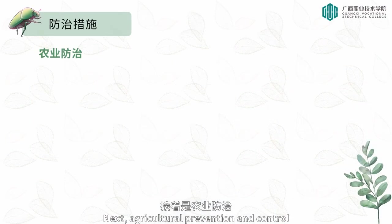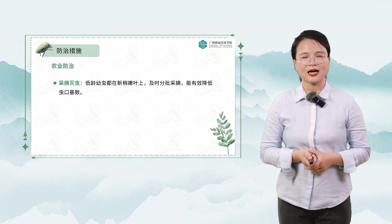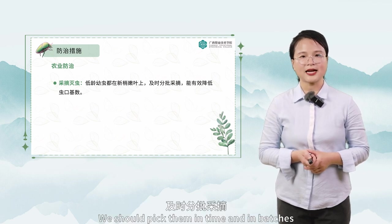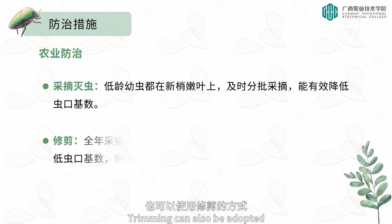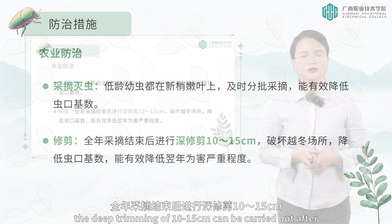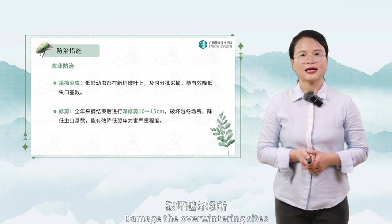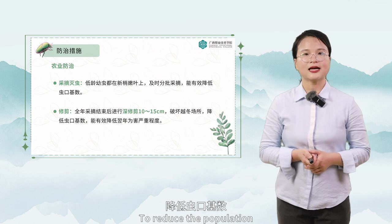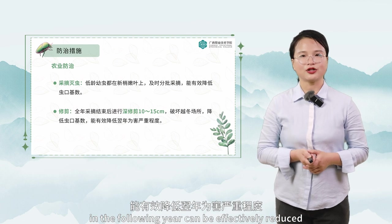Next, agricultural prevention and control. Agricultural control adopts a method of picking and killing pests. Young larvae are all on new shoots, so we should pick them in time and in batches to effectively reduce the population. Trimming can also be adopted: a deep trimming of 10 to 15 centimeters can be carried out after the annual picking is completed, which damages the overwintering sites and reduces the population, effectively reducing damage severity in the following year.